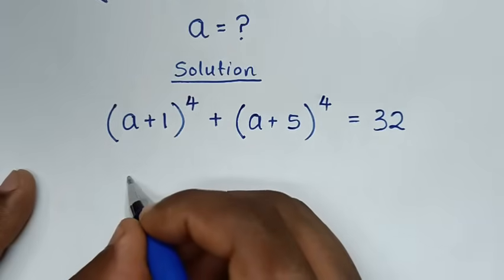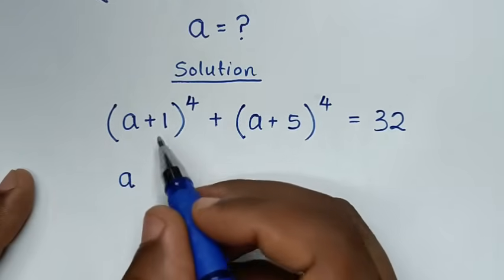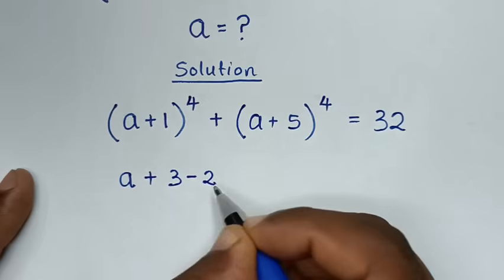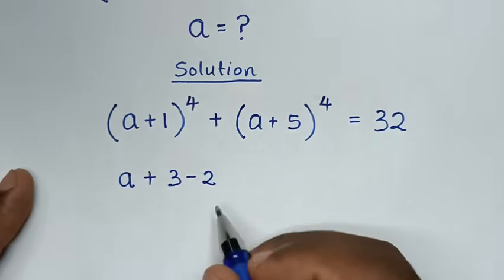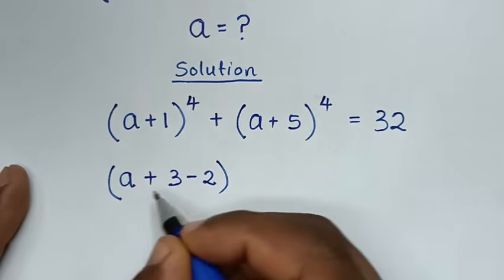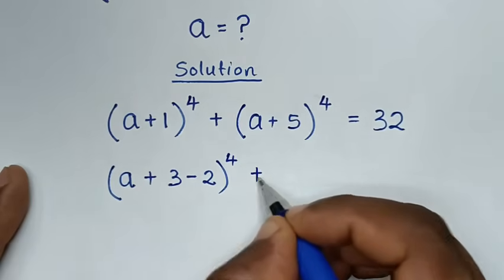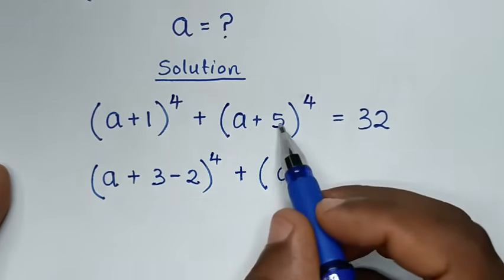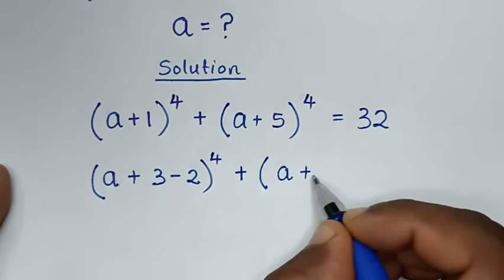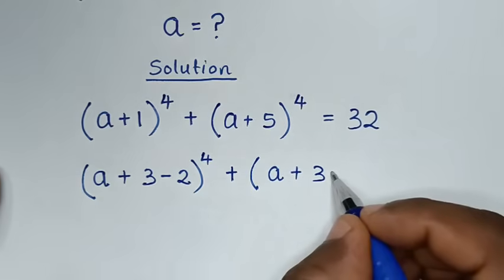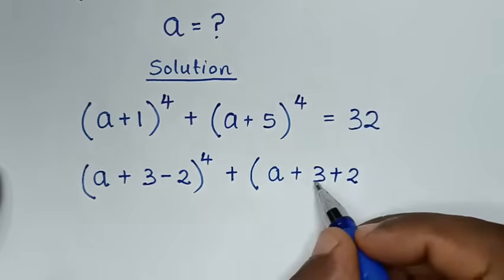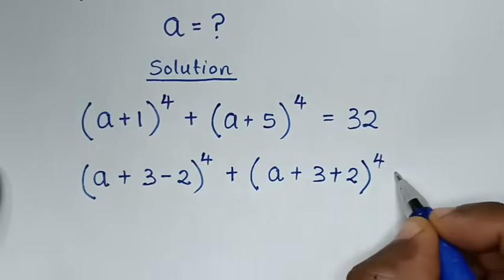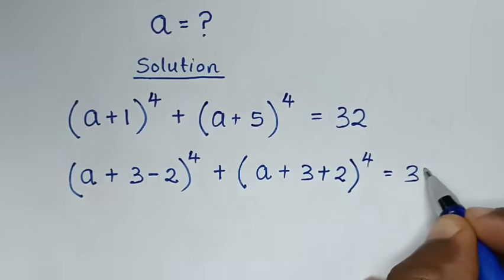We rewrite the expression. Here, a + 1 is the same as a + 3 − 2, since 3 − 2 = 1. And a + 5 is the same as a + 3 + 2, since 3 + 2 = 5. So the equation becomes (a + 3 − 2)⁴ + (a + 3 + 2)⁴ = 32.